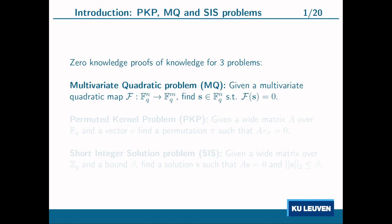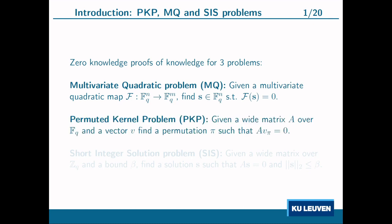The goal of this paper is to prove in zero-knowledge that you know such a vector S — meaning you want to prove knowledge without revealing anything about the vector itself. The second problem is called the permuted kernel problem, where we are given a wide matrix A and a vector V, and the goal is to find a permutation of V such that the permuted vector lies in the kernel of A. Again, the goal is to prove knowledge of such a vector without revealing anything about it.